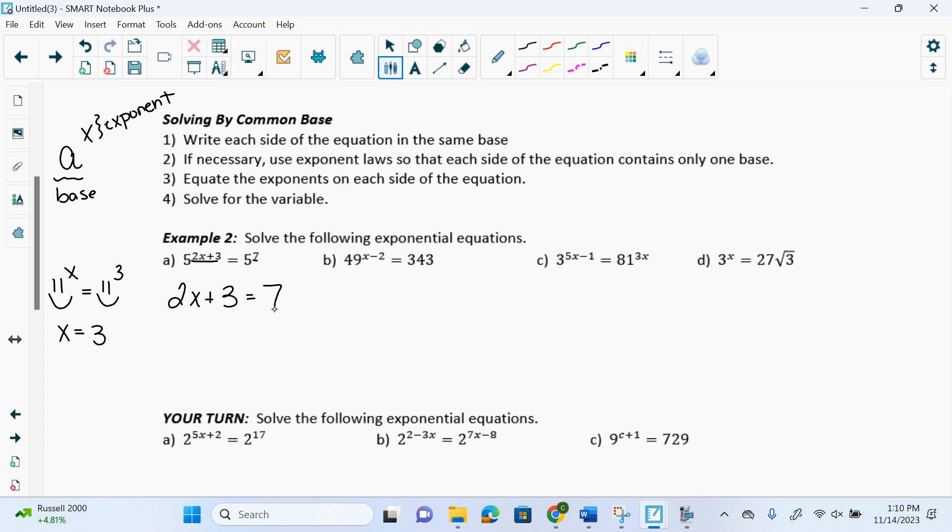Because if I have smiley face to the x equals smiley face to the 3, x has to equal 3. So if I have 5 to the 2x plus 3 equals 5 to the 7, then 2x plus 3 must equal 7. And now I just need to solve. So what am I going to do? Subtract 3. I have to do reverse BEDMAS. So addition and subtraction is first. So I get 2x equals 4. Then what do I do?